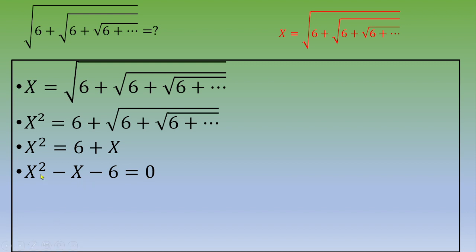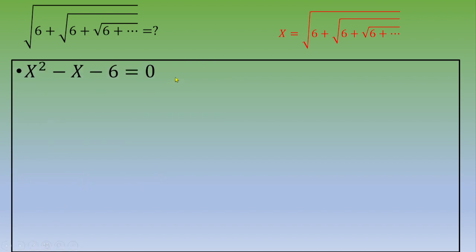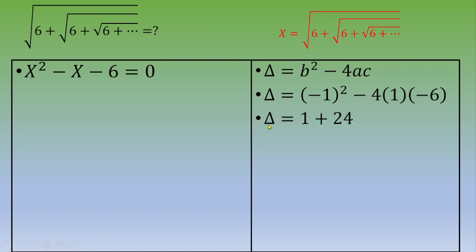Then this is a quadratic equation, so we know how to solve that. First we calculate the discriminant, which is b squared minus 4ac. In this case, it is negative 1 squared, which is the value of b, minus 4 times 1 times negative 6. So at the end you end up with delta is equal to 1 plus 24. So delta is equal to 25.